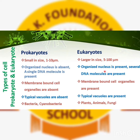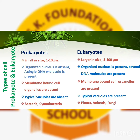Eukaryotes have a nucleus present, and that's why several DNA molecules are present. Prokaryotes do not have membrane-bound organelles, but eukaryotes have membrane-bound organelles such as endoplasmic reticulum, Golgi bodies, vacuoles, ribosomes, and mitochondria. Vacuoles are absent in prokaryotes but present in eukaryotes for food storage. Examples of prokaryotes are bacteria and cyanobacteria; examples of eukaryotes are plants, animals, and fungi.